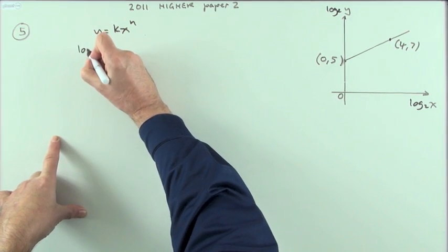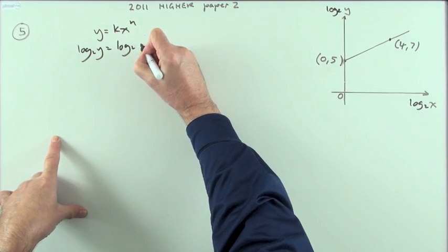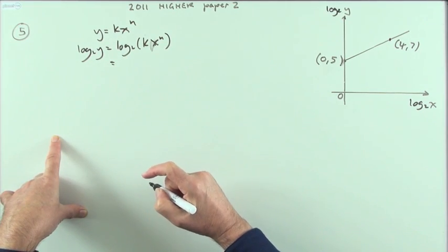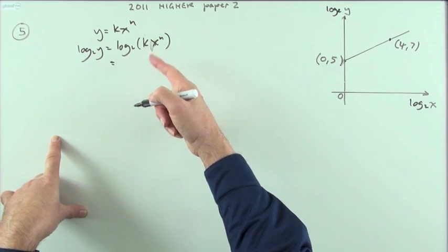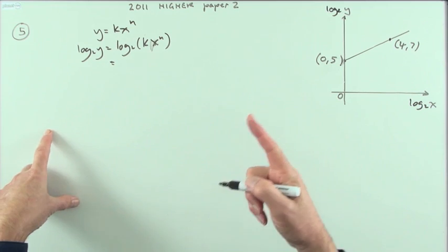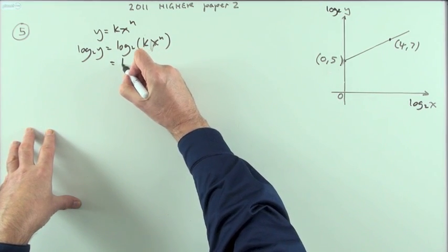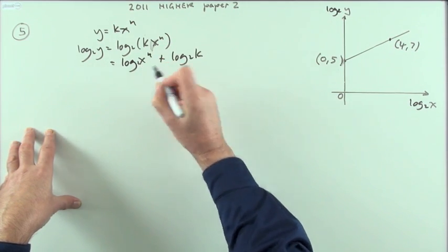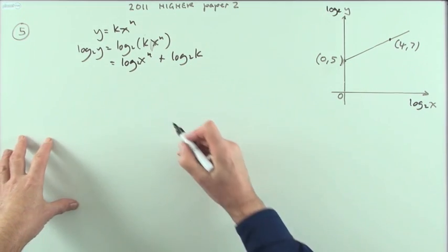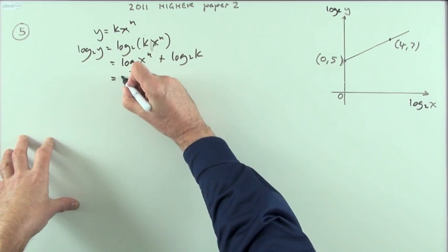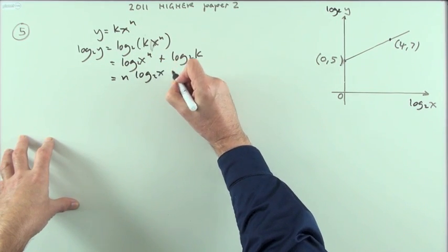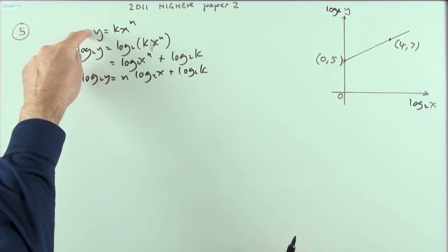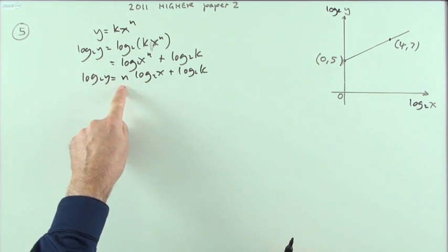This way. If you take log 2 of both sides, log 2y is log base 2 of kx to the n. Splitting that up using the laws of logs, the logarithm of a product splits into the sum of the two logarithms because logarithms are powers. So I've got log x to the n plus log base 2 x to the k. I just put it that way around so that I've just got a constant at the end. And then the power within it can come out and multiply. So I've got n log base 2 of x plus log base 2 of k.